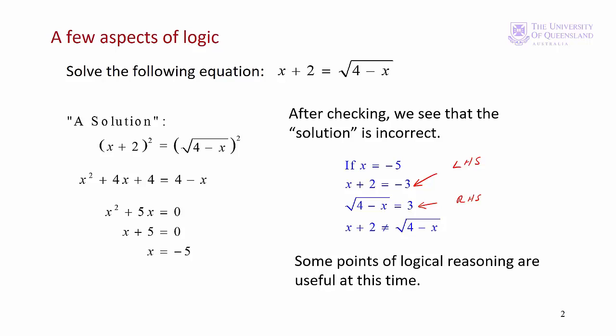Clearly, minus 3 is not equal to plus 3. So the left-hand side is not equal to the right-hand side, and x equals minus 5 is not a solution to the equation.